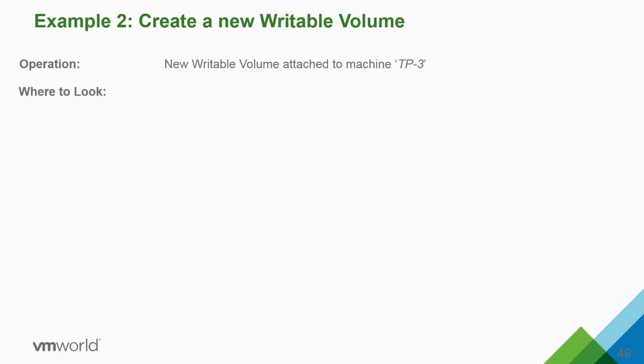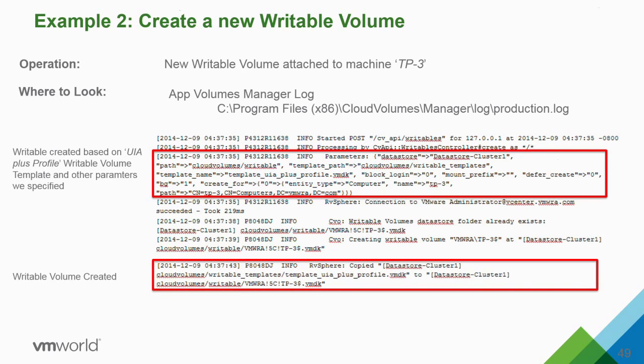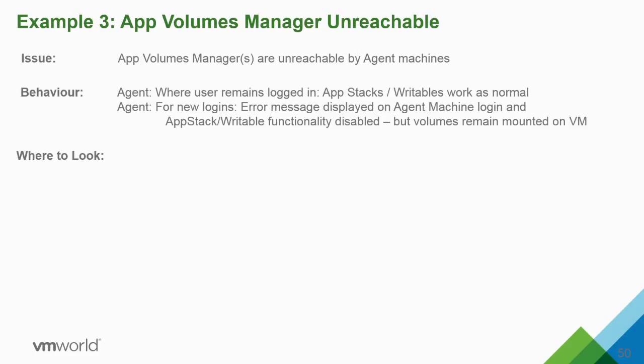Another example: creating a Writable Volume for a machine called TP3. In the production log, you can see the template VMDK — template UIA plus profile.vmdk — being copied to create a writable volume for the user, and then it gets renamed from the template name to a name associated with that specific user.